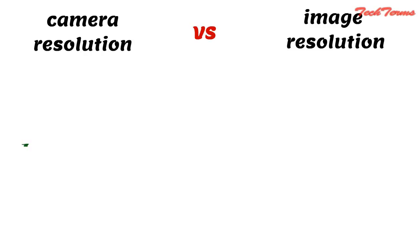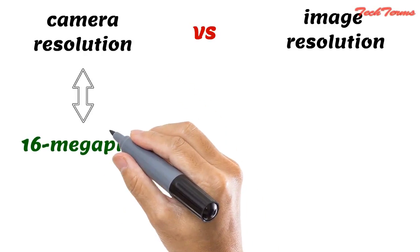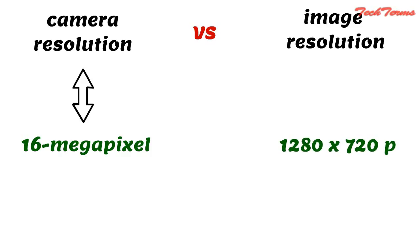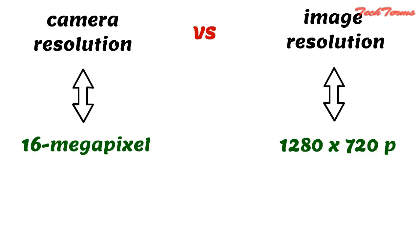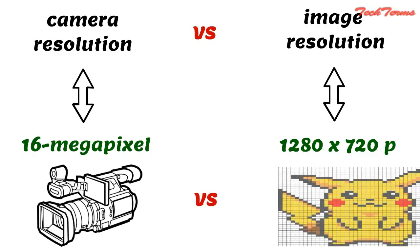When we say 16 megapixel, that is camera resolution. And when we say 1280 x 720 pixels, that is image resolution. Therefore, camera resolution is different from image resolution.